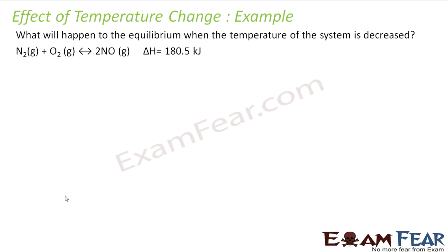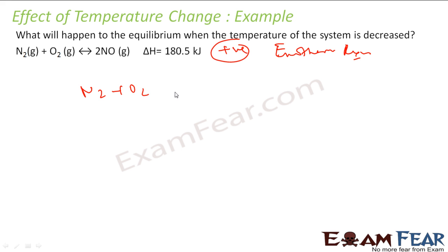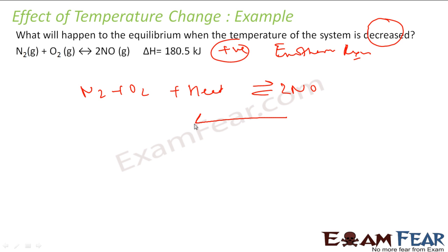Let's take one example: what will happen to equilibrium when the temperature of the system is decreased? In this case, delta H is positive — it is an endothermic reaction. You can rewrite the equation as: this reactant plus heat is required to give the product. If you increase temperature, the reaction moves forward. But now the temperature is decreased, so to counter the effect of heat change, the reaction will go in the backward direction.